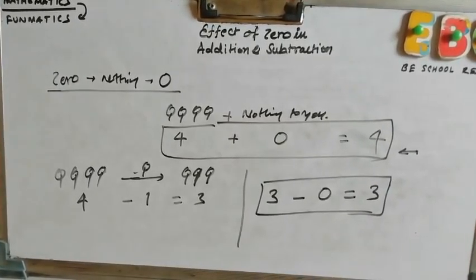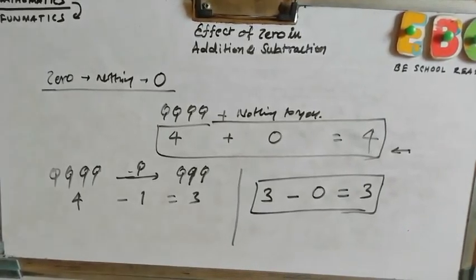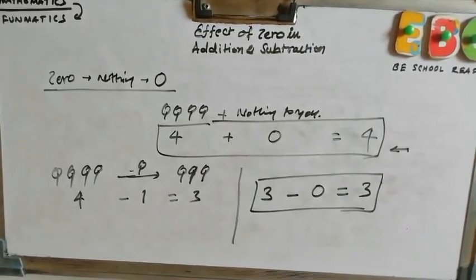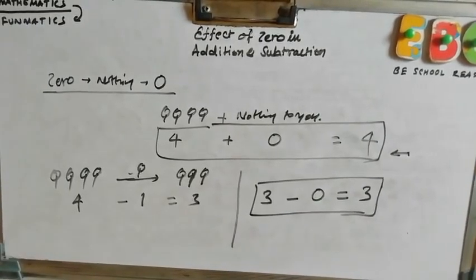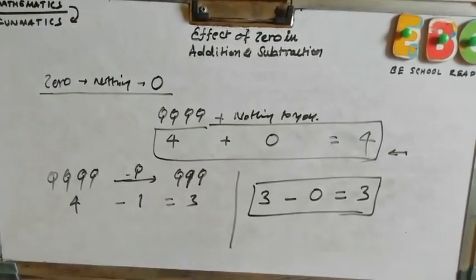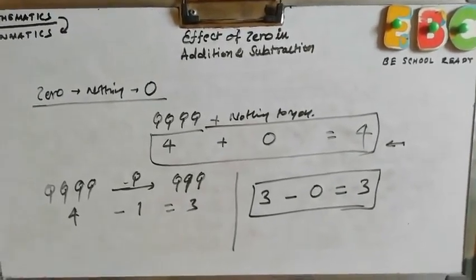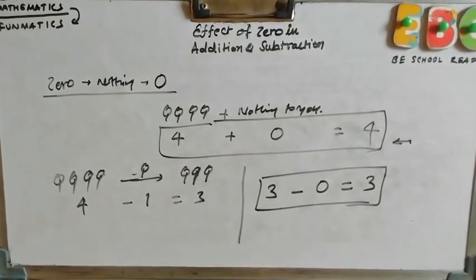So, summarizing this, the effect of zero in addition and subtracting zero, we can say zero does not show any effect on the original number while adding zero to number or subtracting zero from the number. Number will be the same.